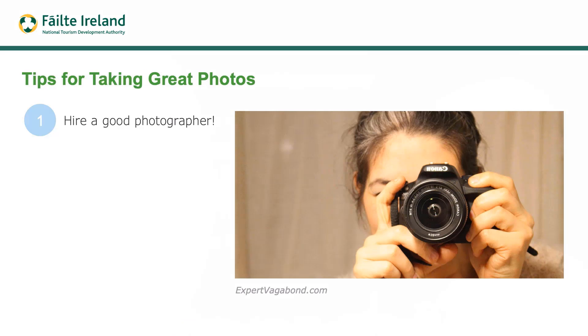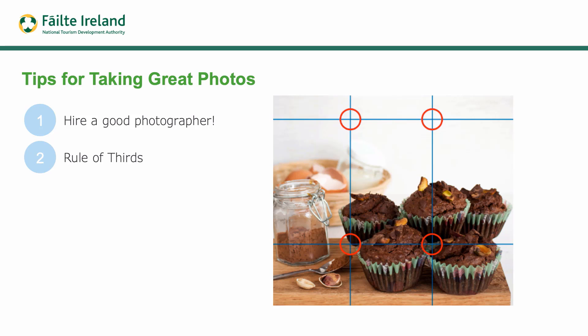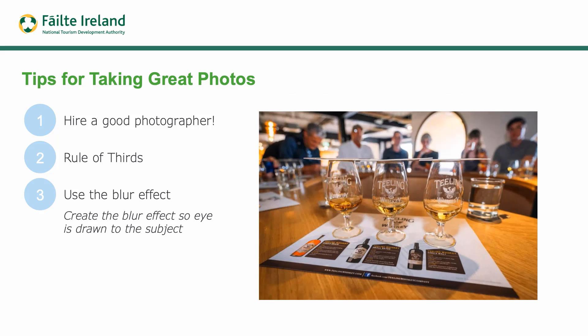Here are a few tips. First, hire a good photographer — if you have a budget, really good imagery is essential. Second, think about the rule of thirds. Imagine lines breaking the image into thirds both vertically and horizontally. You want the focused subject at the intersection of these lines, not the center — it makes a more interesting picture. Another great effect is background blur, where the foreground is sharp but the background is blurred out. You can even do this on an iPhone or Samsung phone now.